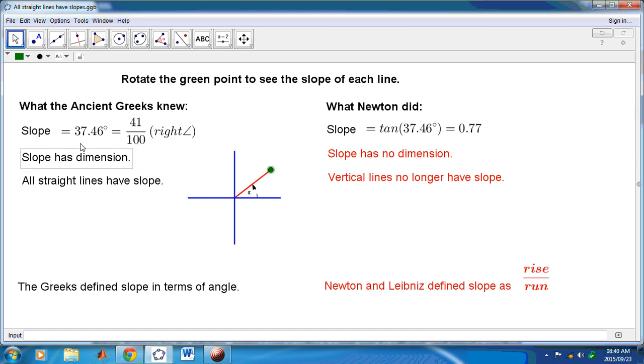The ancient Greeks knew that slope has no dimension. In other words, it's just parts of a right angle. So it's zero parts or one part, or two parts. What Newton did was, I'm sorry, the Greeks knew that slope has dimension. It's part of a right angle. I made a mistake there.